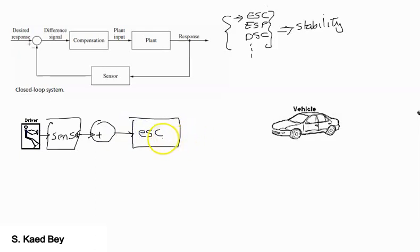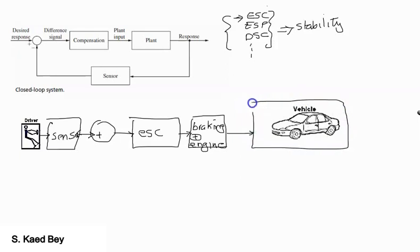If you recall, the electronic stability control applies the brakes automatically and may reduce the engine power until control of the vehicle is regained. So we're going to present the actuator as a separate block, and that's going to be the braking system and the engine system. This is then followed by the vehicle plant, and then we get the response.